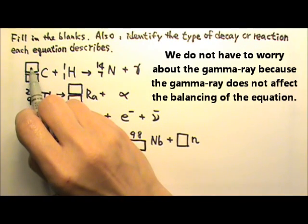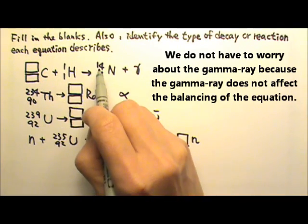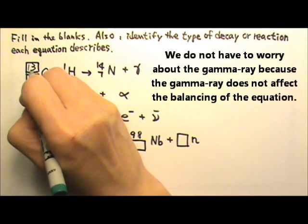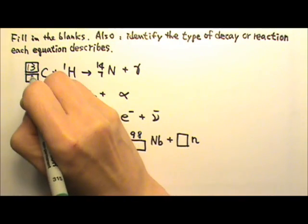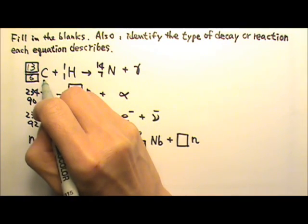For the first one, we have this number plus 1 equals 14, so this here must be 13. And this number plus 1 equals 7, so down here must be 6. Of course, 6 also goes with carbon.